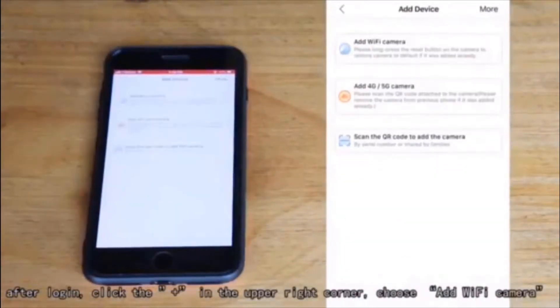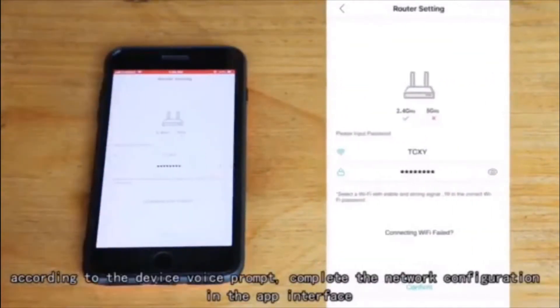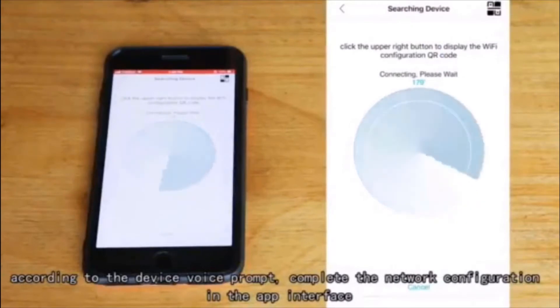After log in, click the plus in the upper right corner, choose add Wi-Fi camera. According to the device voice prompt, complete the network configuration in the app interface.